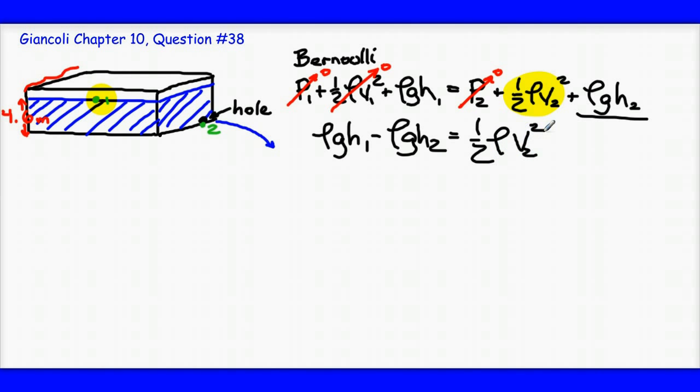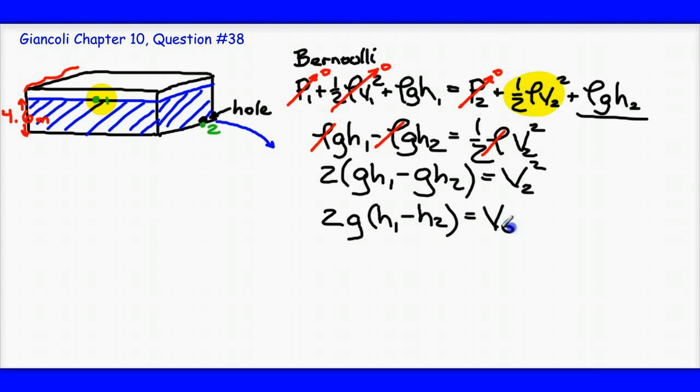Since this is the same fluid, the density of the fluid doesn't change between points 1 and points 2. So, I can also eliminate rho since it exists in each term. And I'll multiply both sides by 2. So, I'm going to get 2 times GH at 1 minus GH at 2 is equal to the velocity of the fluid at point 2 squared. Let's go ahead and factor out a G. And I'm going to get 2G times H at 1 minus H at 2 is equal to V naught squared.